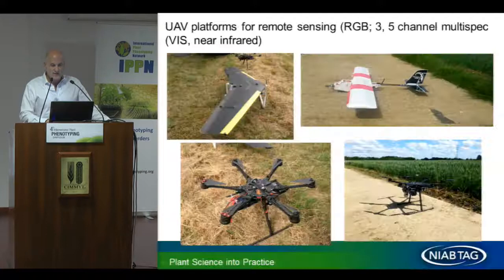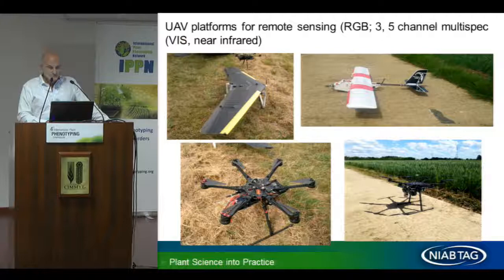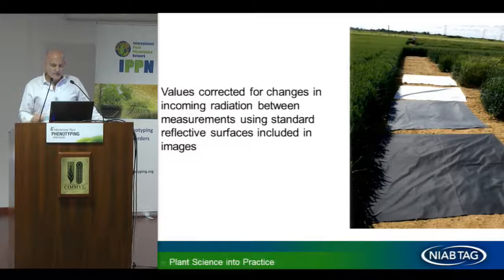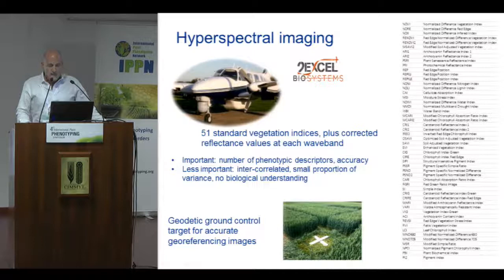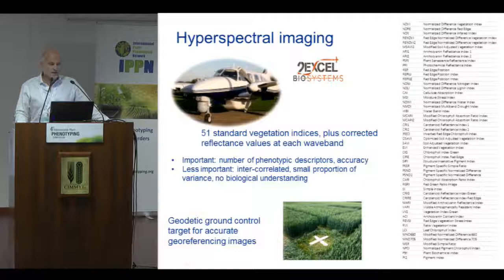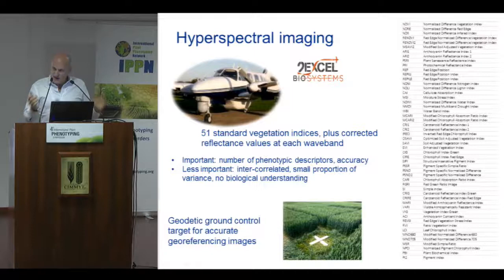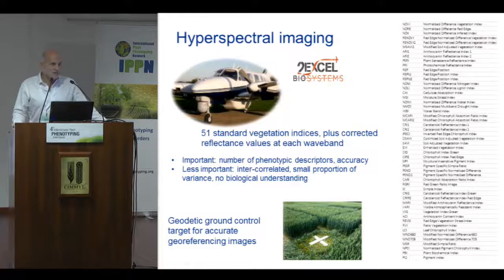We've used UAVs routinely with standardized reflective surfaces to compensate for changes in radiation as best we can, though it's not perfect. For hyperspectral imaging, we chose not to put a very expensive hyperspectral camera on a drone and instead mounted it on a plane. This allowed us to collect 51 standard vegetation indices as well as corrected reflectance values at each wave band. We're interested in phenotypic descriptors — analogous to genetic markers for understanding the genotype, we want as many phenotypic markers as possible to understand the phenotype.